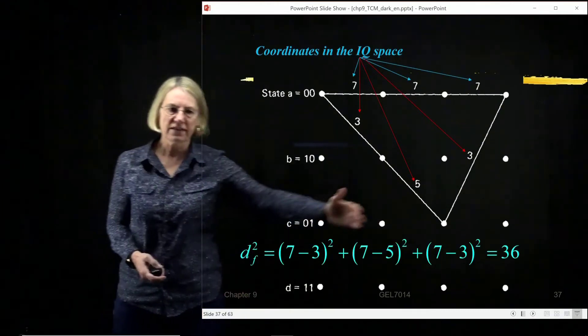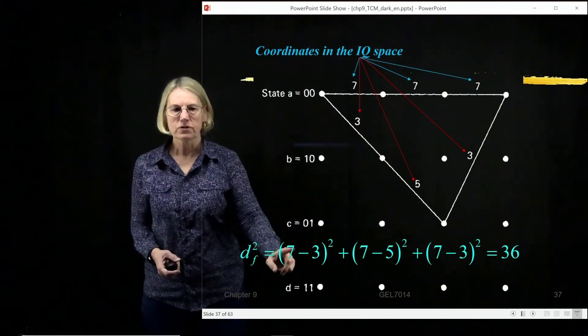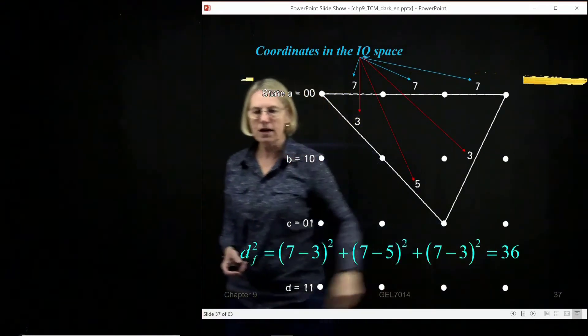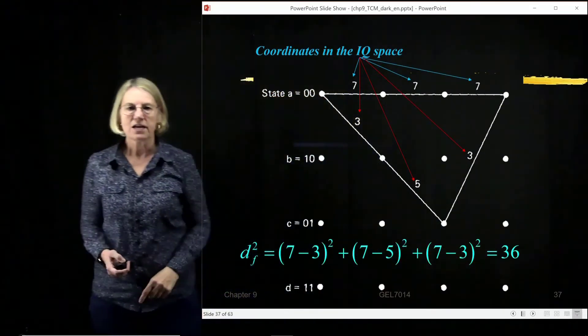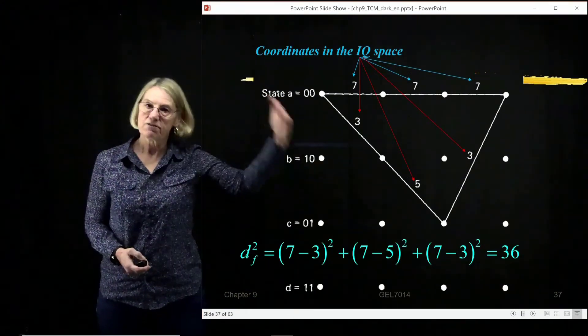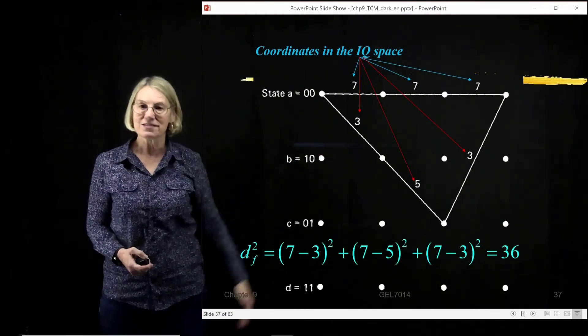And so we get this equation, and I get 4 squared plus 2 squared plus 4 squared, and that all comes out to 36. So that's the square of the free distance. So I know that the free distance for this path is 6.